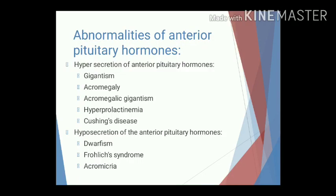Today we will discuss about abnormalities of anterior pituitary hormones. Abnormalities include either hypersecretion or hyposecretion. Hypersecretion of anterior pituitary hormones results in gigantism, acromegalic gigantism, hyperprolactinemia, and Cushing's disease. Disorders due to hyposecretion of anterior pituitary hormones are dwarfism, Frohlich's syndrome, and acromicria.